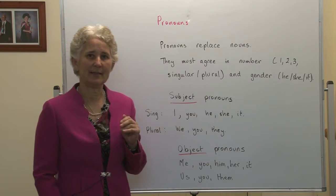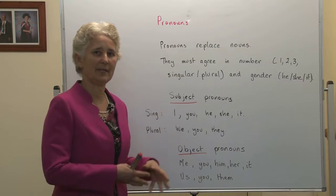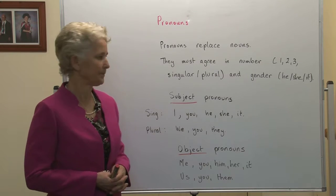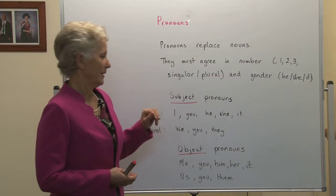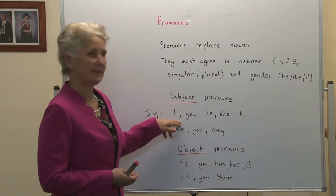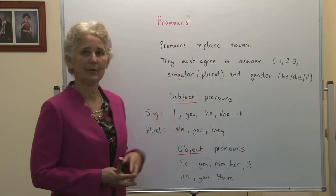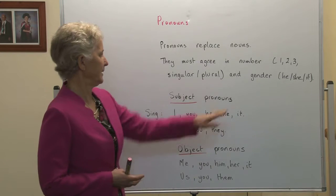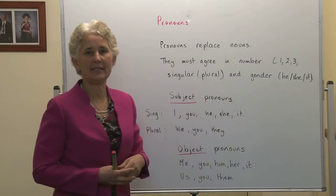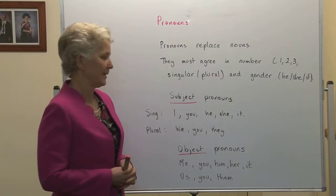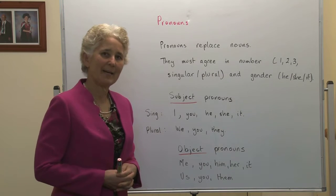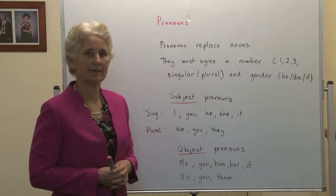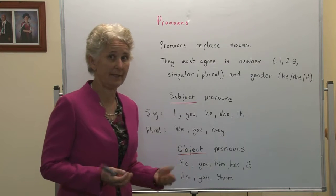They must agree in number. If the noun is singular, the pronoun must also be singular. Singular pronouns in the subject: I, you, he, she or it. The pronouns must also relate to the gender — he, she or it. If we're talking about a thing, that is the car, we'll use it as a pronoun.